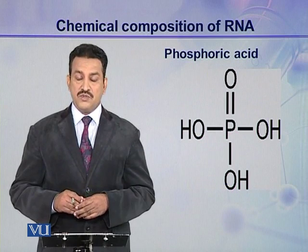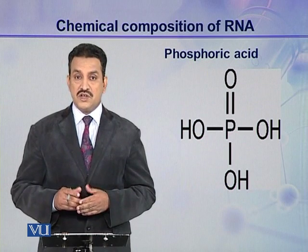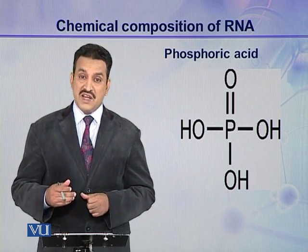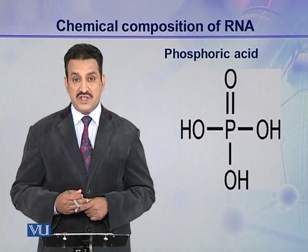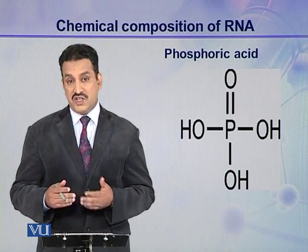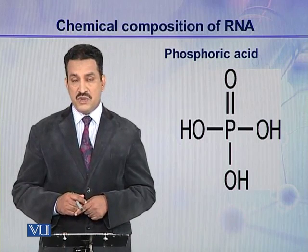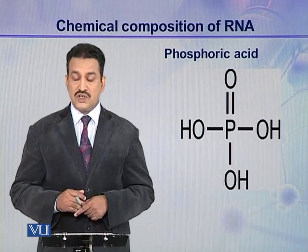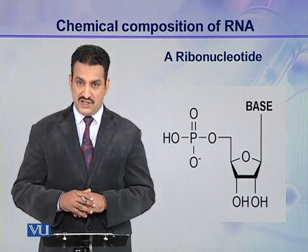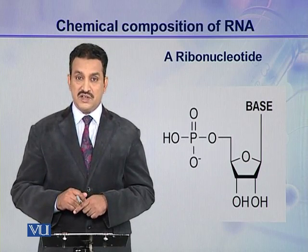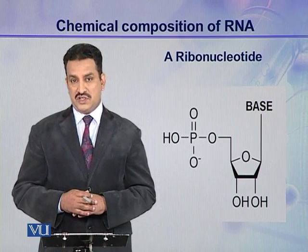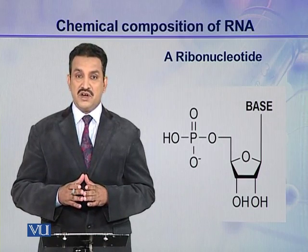The third component of a ribonucleotide is phosphoric acid. Phosphoric acid has three hydroxyl groups, and these hydroxyl groups have the ability to make ester linkages with the hydroxyl groups present on the pentose sugar — either ribose or deoxyribose. So ideally it can make three ester linkages, but normally in a polynucleotide chain, this phosphoric acid makes two ester linkages. So a complete ribonucleotide consists of all three components: a nitrogenous base, a pentose sugar, and a phosphoric acid.